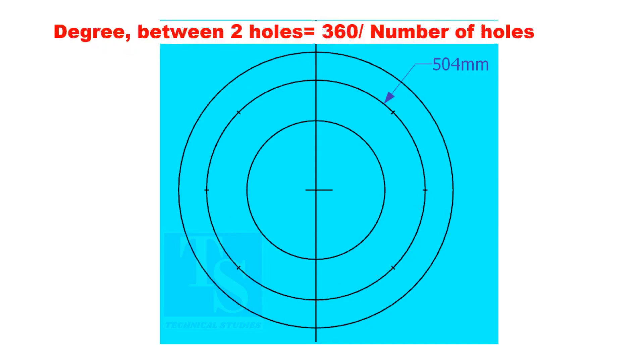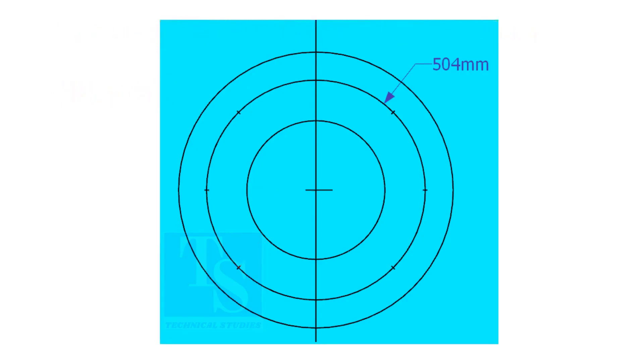If you divide 360 by the number of holes, you will get the angle between two holes. Cord length equals sine 45 divided by 2 multiplied by PCD.